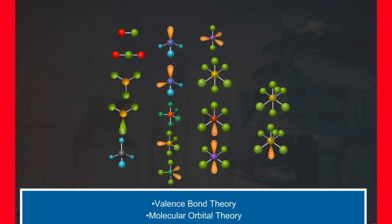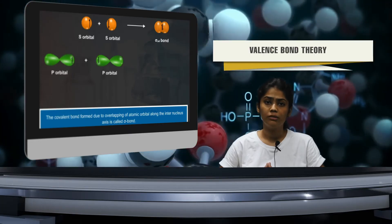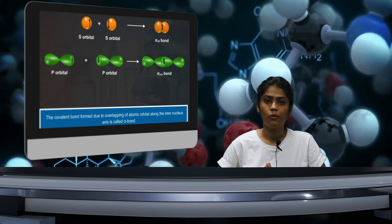The VSEPR theory gives the geometry of simple molecules, but theoretically it does not explain them and also has limited applications. To overcome these limitations, two important theories based on quantum mechanical principles are commonly used: valence bond (VB) theory and molecular orbital (MO) theory.